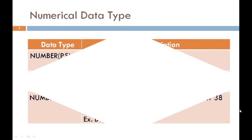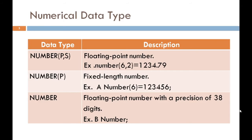First, we see the numerical data type. Numerical data type has three categories. Based on the requirement of the user, we use these numerical data types. The first one is NUMBER(P, S), where P is precision and S is scale. The Oracle NUMBER data type has a precision and a scale. The precision is the number of digits in a number, and it ranges from 1 to 38. The scale is the number of digits to the right of the decimal point in a number, and it ranges from minus 84 to 127.